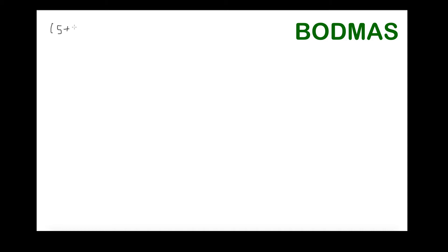Now introducing brackets: (5 plus 3) multiplied by 4. Brackets come first before anything else, so we solve what's in the brackets first: 5 plus 3 is 8. Then we multiply by 4: 8 times 4 equals 32.